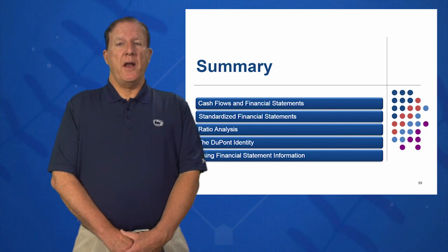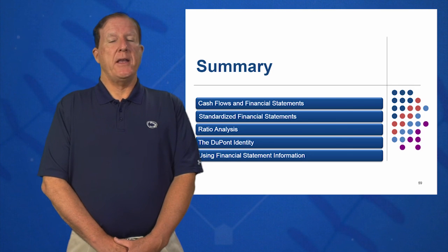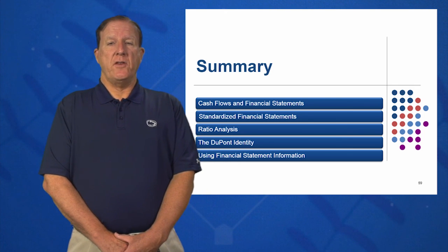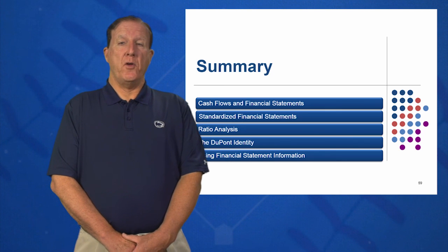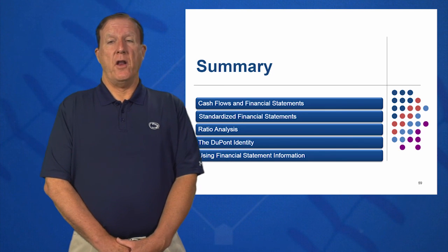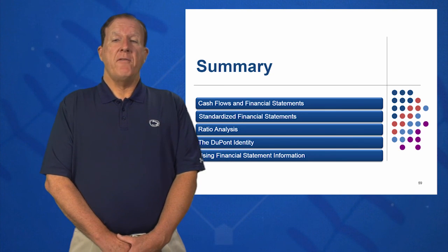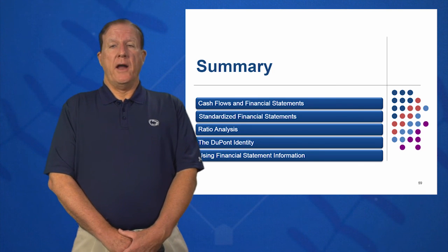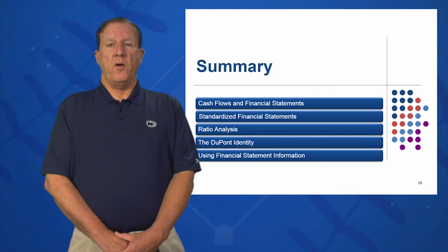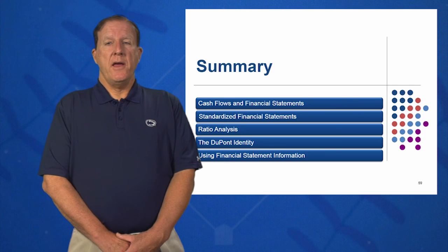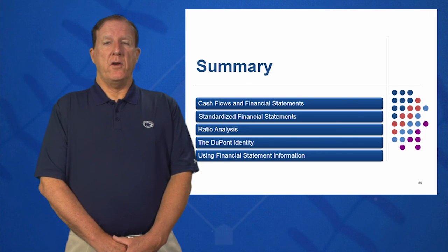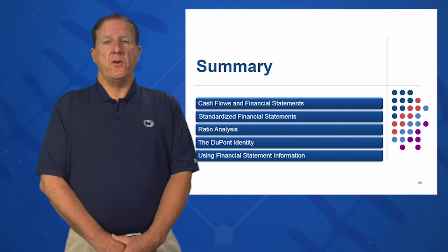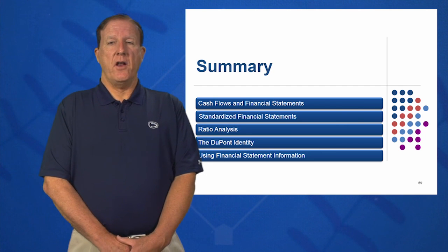Fourth, the DuPont identity — how to break down net return on equity into three pieces and use that analysis to help improve your net return on equity. And finally, what do we use all this financial statement information for? It's mostly for performance analysis and comparisons with other companies in your industry and beyond. Hopefully you've enjoyed Session 3 of Introduction to Finance.